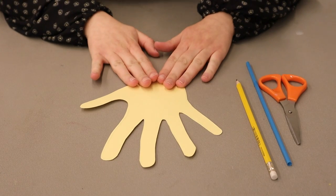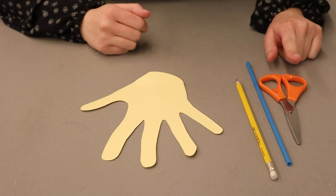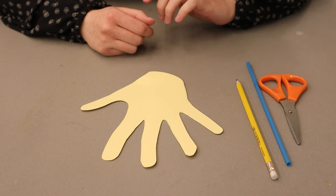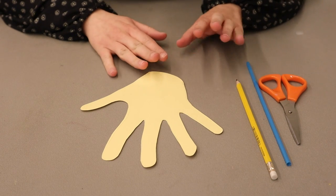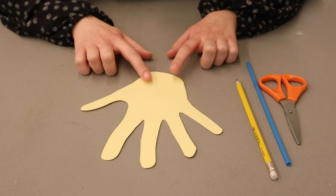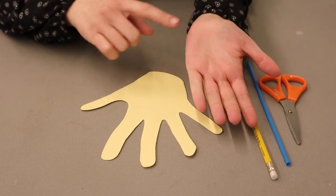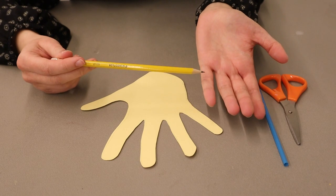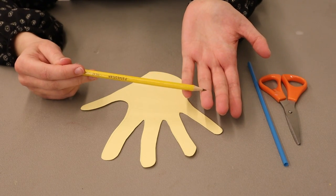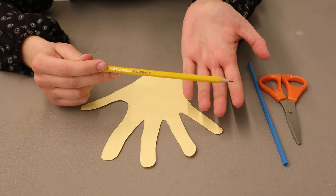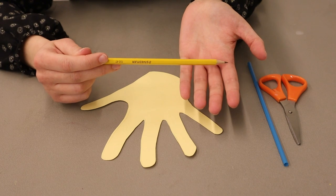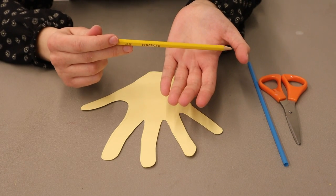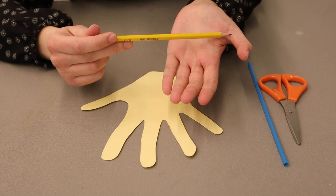Great! Now that our hand is cut out, we are going to need our scissors, our straws, and our pencil. We are now going to create the bones that we find in our hand. To create the bones, we are going to look at our human hand and we're going to use our pencil to find the lines that you see on our fingers. Each finger has two lines for our three bones, and our thumb has one line for our two bones.